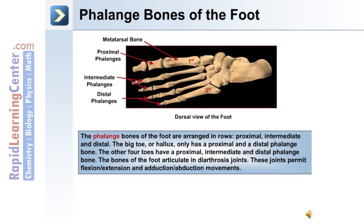The phalange bones of the foot are arranged in rows: a proximal row, an intermediate row, and a distal row. The big toe or hallux has only a proximal and distal phalange bone. The other four toes have a proximal, intermediate, and distal phalange bone. These bones of the foot articulate in diarthrosis joints, which permit flexion and extension, as well as adduction and abduction movements.